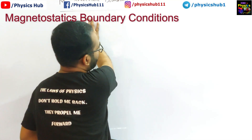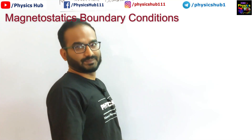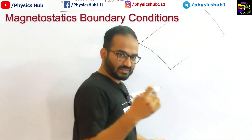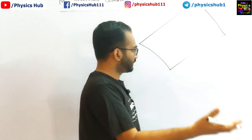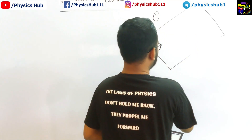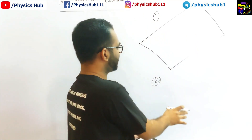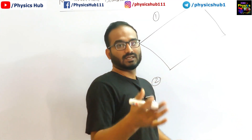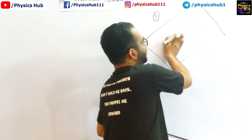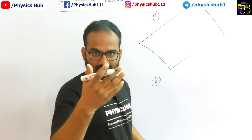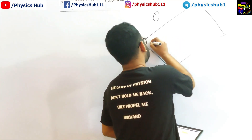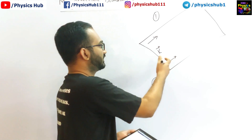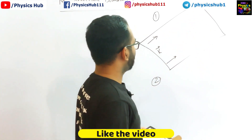So what happens in a magnetostatic boundary condition? We consider a boundary — a surface separating two media. Let's call them media one and media two. In electrostatics, we considered that the separating surface contained some surface charge sigma. The analogous thing in magnetostatics is surface current, denoted by K. This is the surface current flowing over the surface.